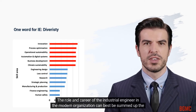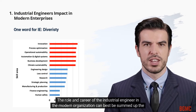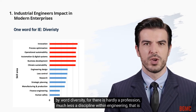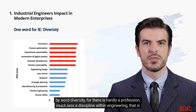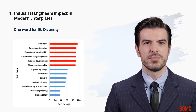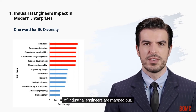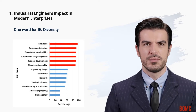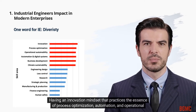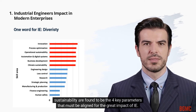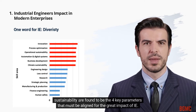The role and career of the industrial engineer in the modern organization can best be summed up by one word: diversity, for there is hardly a profession, much less a discipline within engineering, that is so broadly defined. In a recent survey of top executive management, key functions associated with the high-impact areas of industrial engineers are mapped out. Having an innovation mindset that practices process optimization, automation, and operational sustainability are found to be the four key parameters that must be aligned for the great impact of IE.